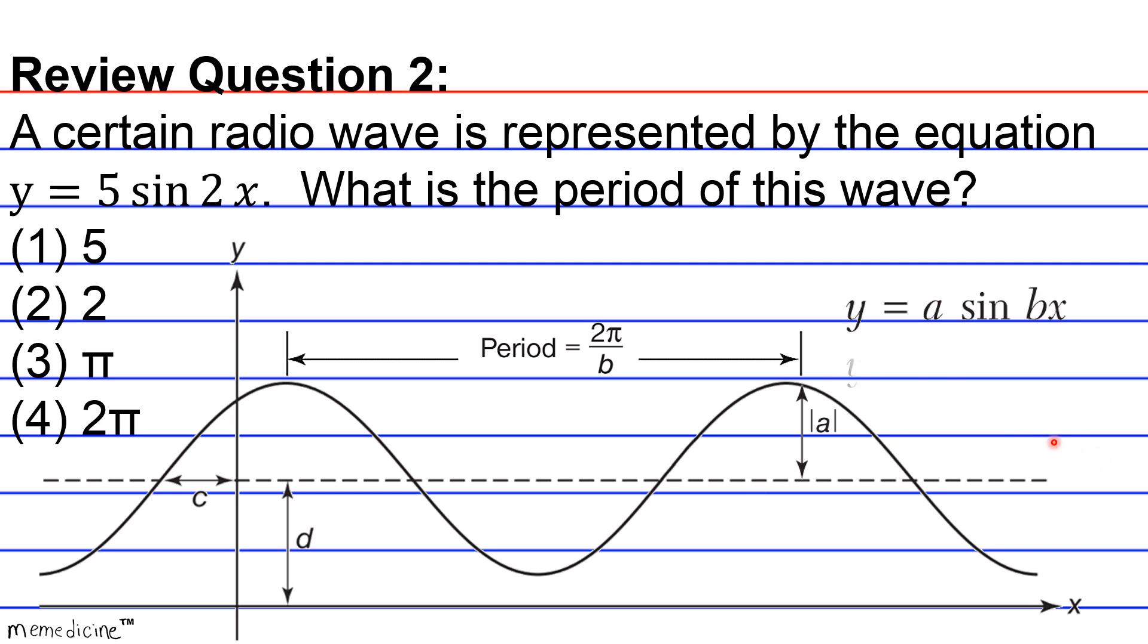So in this problem, we're told that b = 2, and we're given that a = 5. Therefore, the period is going to be 2π/b, which is 2π/2, and our answer is going to be π.